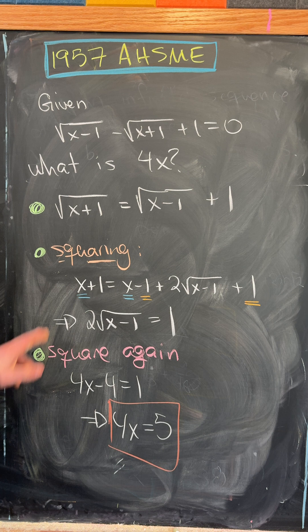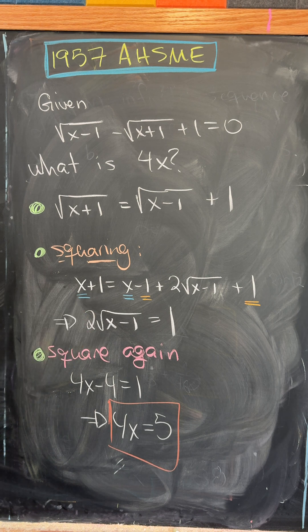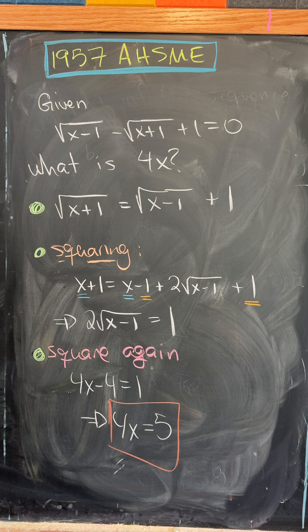Now, squaring both sides, we'll get x plus 1 equals x minus 1 plus 2 times the square root of x minus 1 plus 1. But now we get some simplification indicated by the underlines. Those cancel.